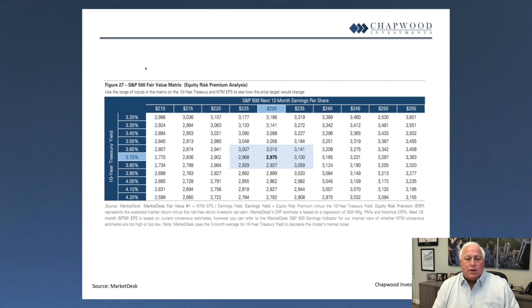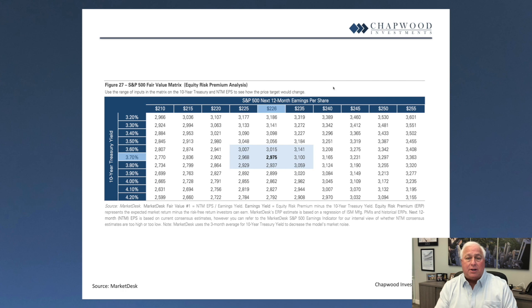In this chart, on the upper portion you have the S&P earnings per share estimates. Right now you have estimates that range from $180 to $300 for 2023. On the left-hand side you have the US 10-year Treasury yield.